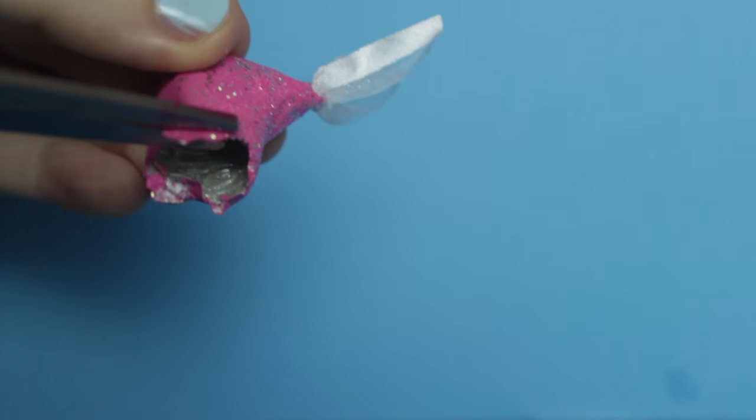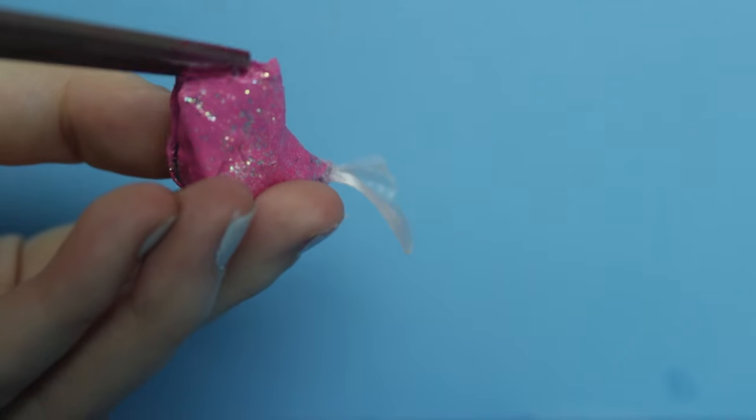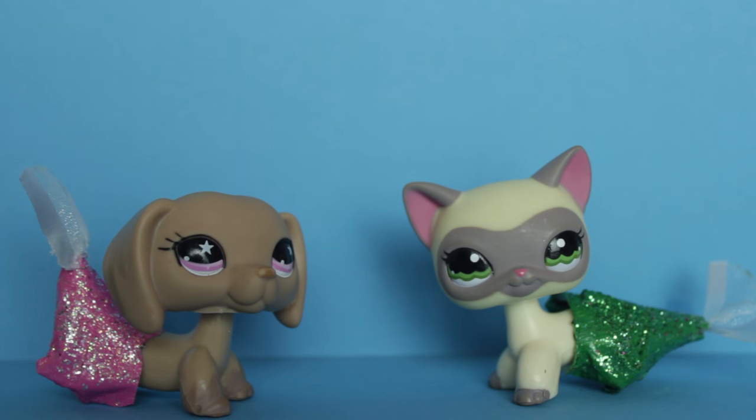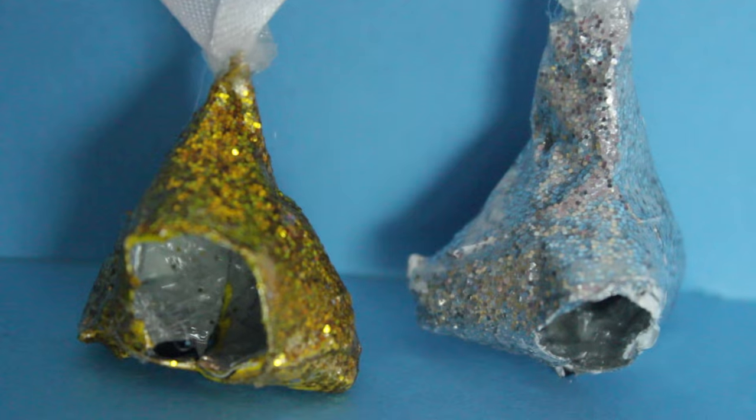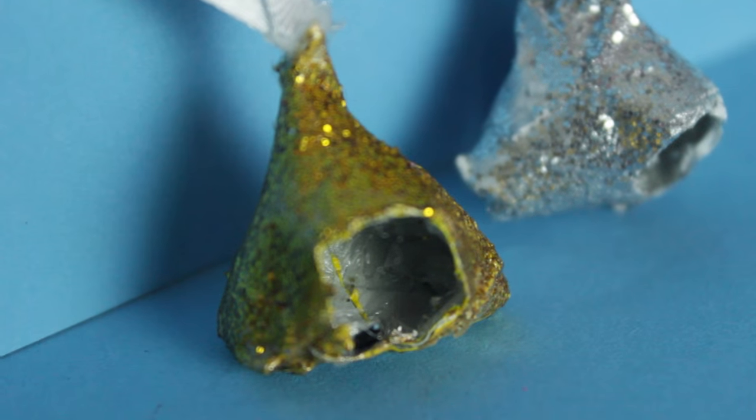Almost done. Just clean up the edges using your scissors. That's how to make an LPS mermaid tail. I hope you found this useful. You can also use nail polish to color the tails like I did with these.